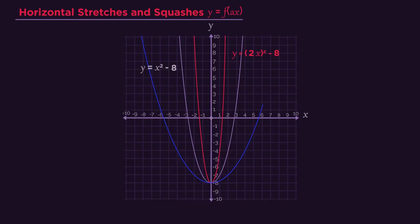Notice how 2 seems to squash the curve horizontally, whereas a half stretches the curve. As with all horizontal transformations, they're a little strange.